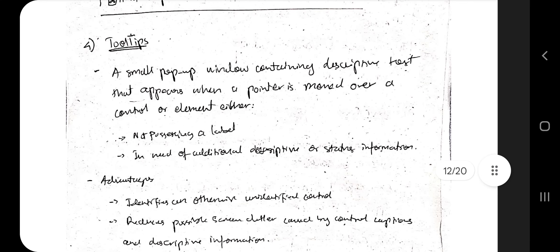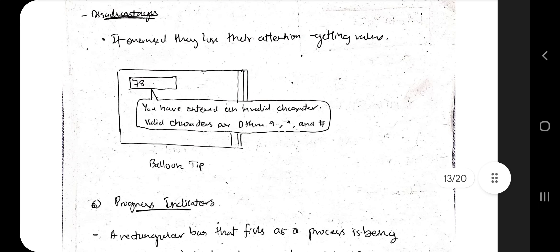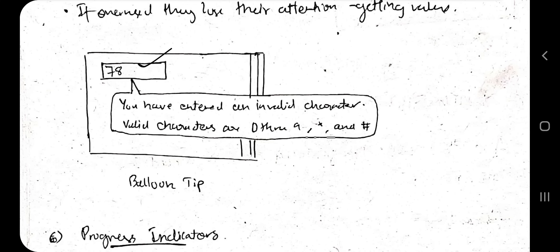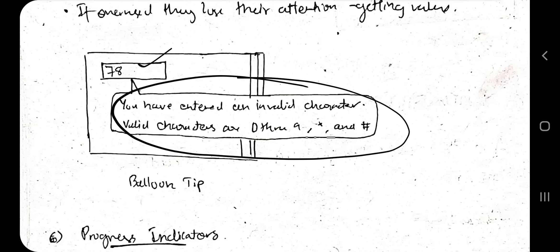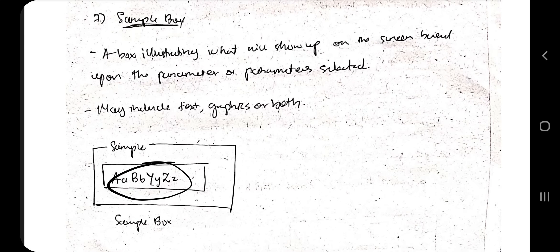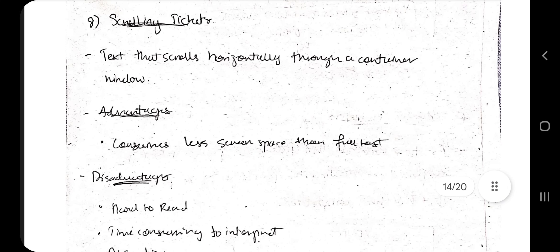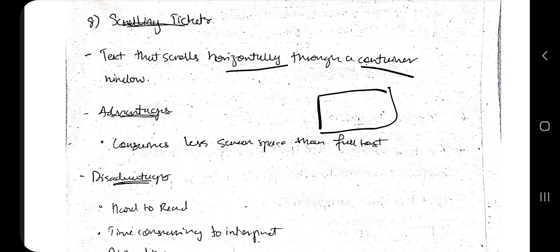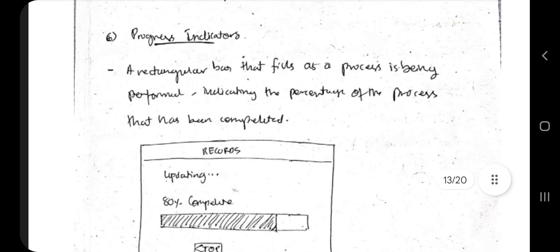Tooltips display text when you hover over an icon, describing its function. Balloon tips appear as notifications during input — for example, when entering a password, a balloon tip might indicate requirements like uppercase, lowercase, special character, number, and minimum length. Progress indicators show how much of a process is completed. Sample boxes contain text and graphics such as CAPTCHA. Scrolling tickers display text crawling horizontally through a container window, like news flashes on government websites.